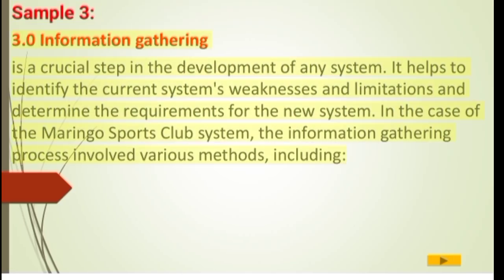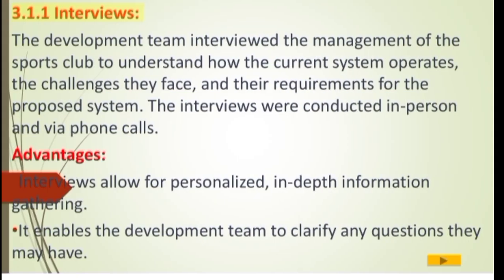Sample 3 — Section 3.0: Information Gathering. Information gathering is a crucial step in the development of any system. It helps to identify the current system's weaknesses and limitations and determine the requirements for the new system. In the case of the Moringo Sports Club system, the information gathering process involved various methods. Section 3.1.1 Interviews: the development team interviewed the management of the sports club to understand how the current system operates, the challenges they face, and their requirements for the proposed system. The interviews were conducted in person and via phone calls.